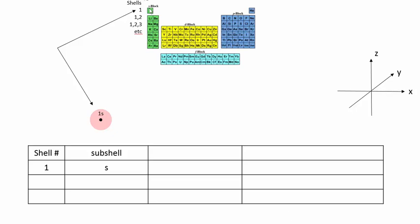The periodic table consists of groups, columns coming down: group 1, group 2, and the P block are group 3, 4, 5, 6, 7, and 8.